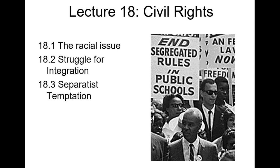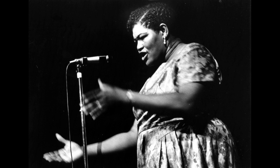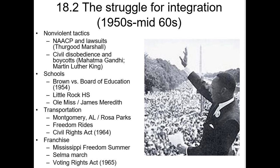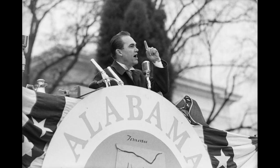Bonjour and welcome back to the history of the United States since 1877. On the program today: the civil rights movement of the 1950s and 1960s. There is a lot of material on our plate so I divided this lecture into three parts. First, we will look at the history of racism that afflicted the black community in the south up until the 1950s. Second, we will move on to the attempt to obtain integration into American society under Martin Luther King in the late 50s and early 60s. Finally, we will look at the more radical separatist movement of the late 1960s.